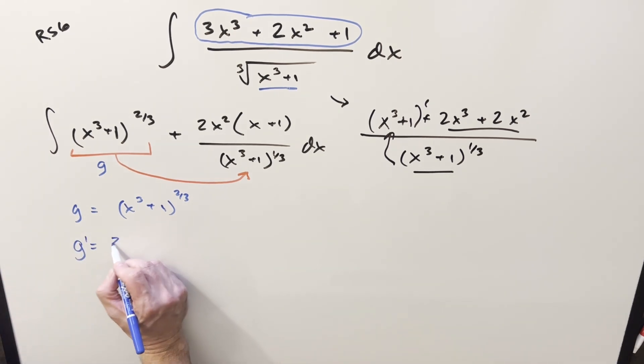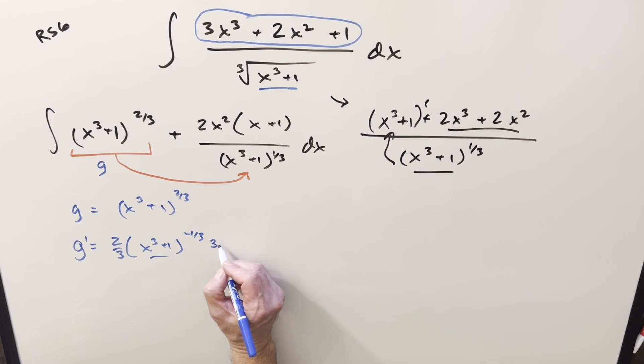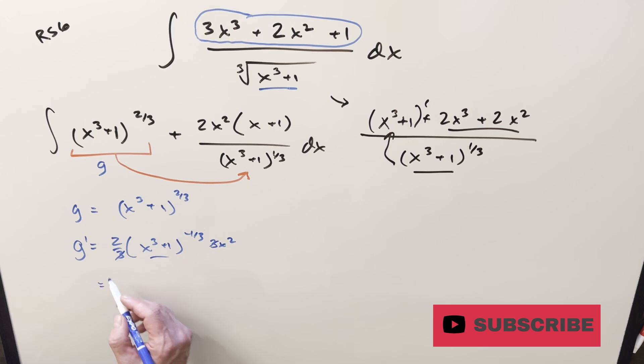So g prime is going to be, first we do power rule, 2/3 x cubed plus 1, minus 1/3. Then we need chain rule on this, and that's going to give me 3x squared. But we can simplify this. I can cancel out the 3s, and then 2 times x squared, I can write it as 2x squared. Bring this into the denominator, and we'll have it as x cubed plus 1, 1/3.